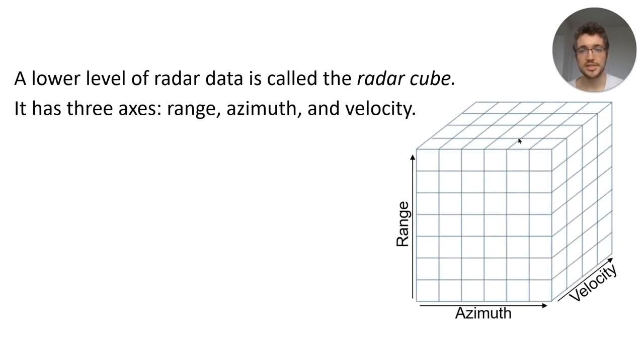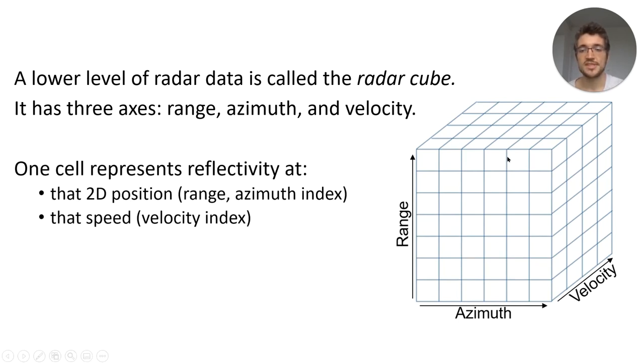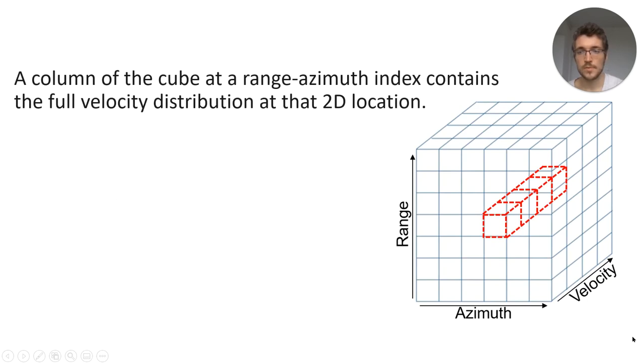A lower level of radar data is called the radar cube. It has three axes, range, azimuth, and velocity. One cell represents reflectivity at that given 2D position, range and azimuth, and the given velocity index, which represents a speed. A column of the cube at a range azimuth index contains the full velocity distribution at the 2D location.